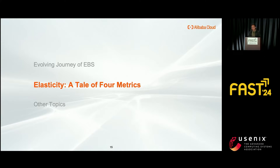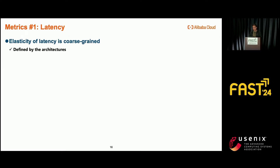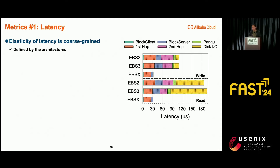Part two: unlike common block devices, cloud block devices offer higher elasticity. I will discuss the elasticity of EBS from four metrics. The first metric is latency. The latency of a virtual disk is determined by the architecture — specifically the path a request travels. As shown in this figure, it presents the breakdown of average latency for 8 KB random read-write operations across different generations of EBS. The latency of an EBS2-backed virtual disk is constrained by the two-hop network and software stack processing under the physical SSD. Hence, the elasticity of latency is inherently coarse-grained, reflecting varying levels of overhead across architectures.